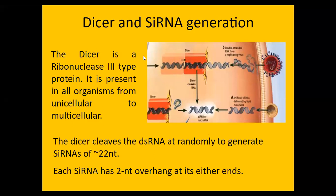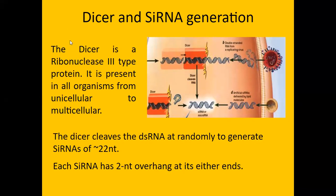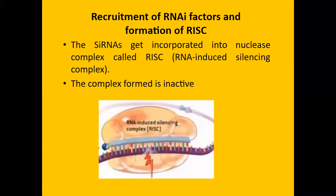Here the diagram shows DICER and single-stranded interfering RNA generation. DICER is a ribonuclease-type protein present in all organisms from unicellular to multicellular. DICER cleaves double-stranded RNA randomly to generate single-stranded RNA of 22 nucleotides each. These single-stranded RNAs are then used in RNA interference.